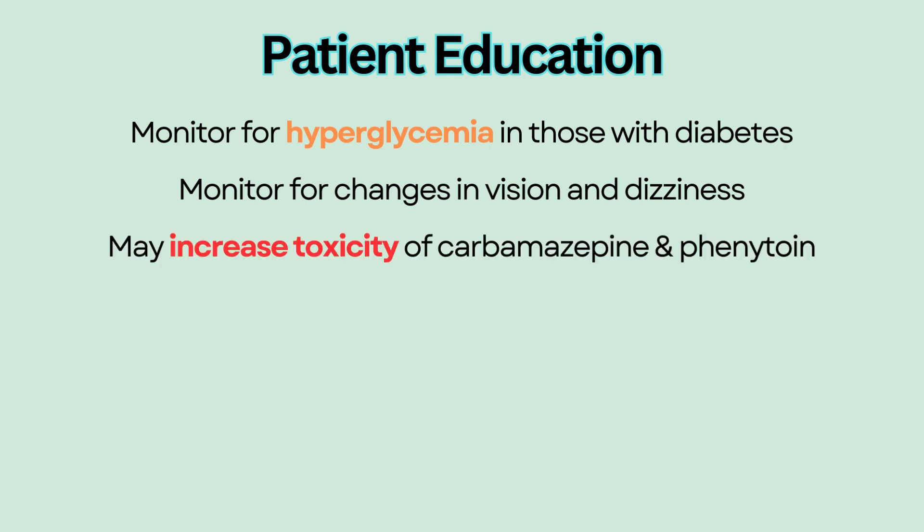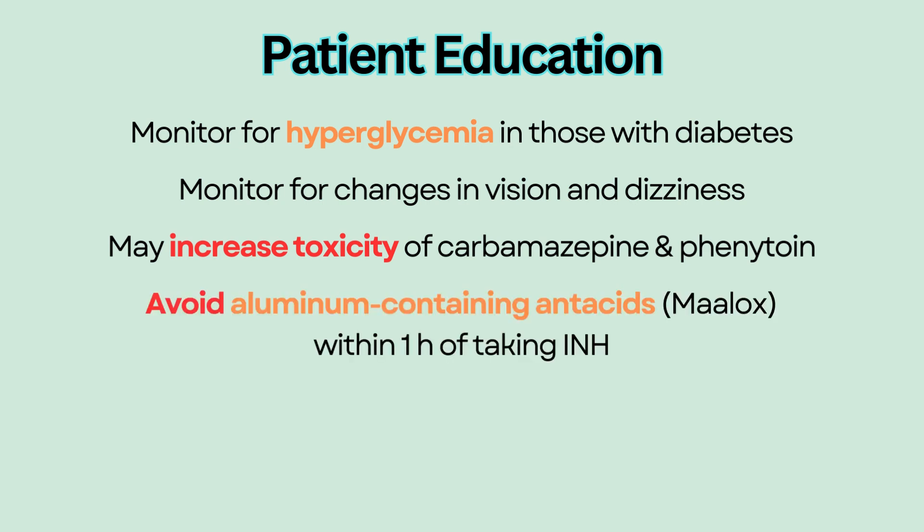Isoniazid may increase the risk of toxicity of carbamazepine and phenytoin, which are both anti-seizure medications. Avoid aluminum-containing antacids such as Maalox within one hour of taking isoniazid, as it interferes with its absorption. Isoniazid should be given one hour before or two hours after a meal, because food may delay absorption.